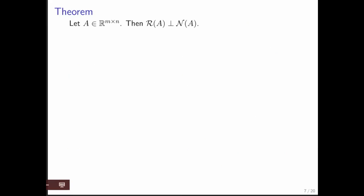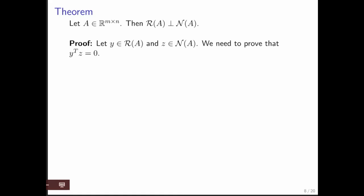Here's an important theorem: the row space of A is orthogonal to the null space of A. Both of these are subsets of Rn. The row space has dimension k and the null space has dimension n minus k, giving k linearly independent basis vectors for the row space and n minus k vectors for the null space. We want to show that for any vector y in the row space and any vector z in the null space, their dot product is always equal to zero.